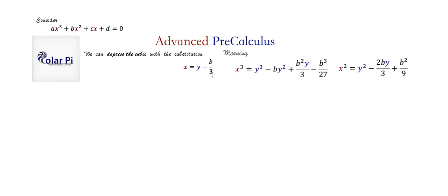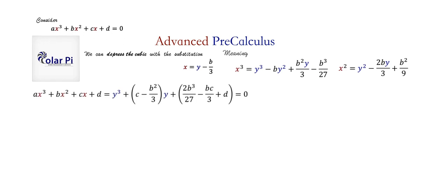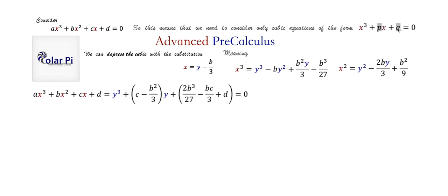Substituting all three expressions into the standard cubic, we get this here. Yes, I skipped some monotonous algebra — it's not of great value. The key fact is that a standard cubic with four terms can be depressed to this form, meaning we only really need to consider cubics of the form x³ + px + q.